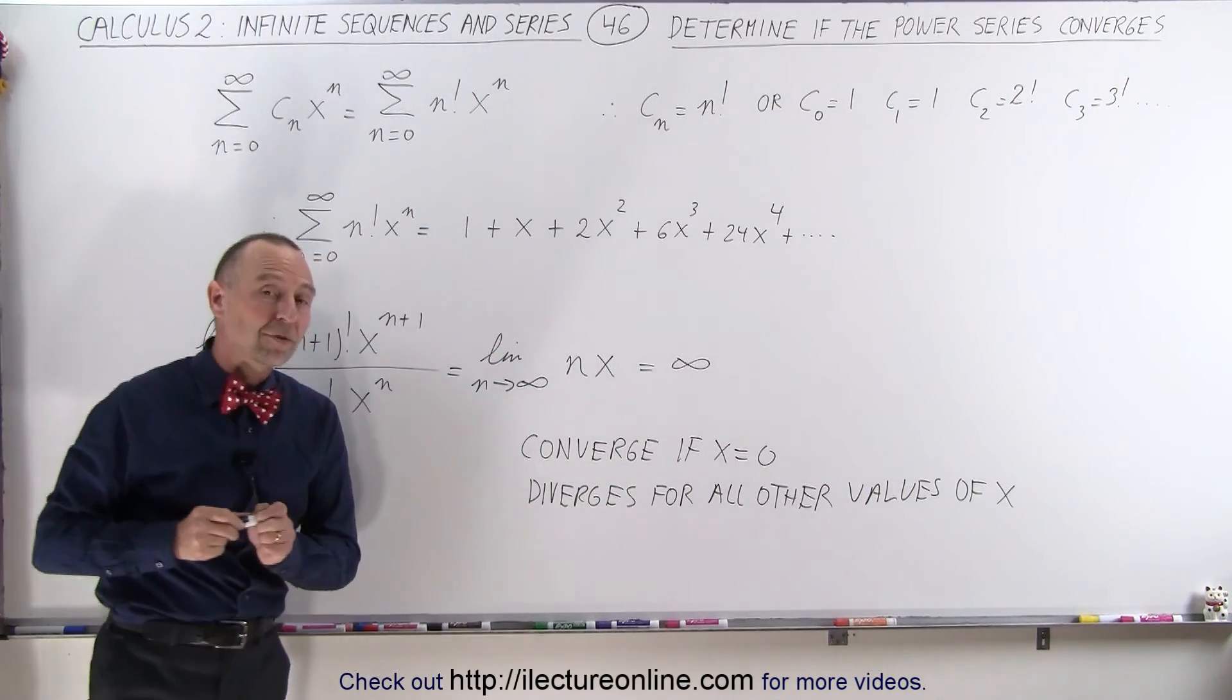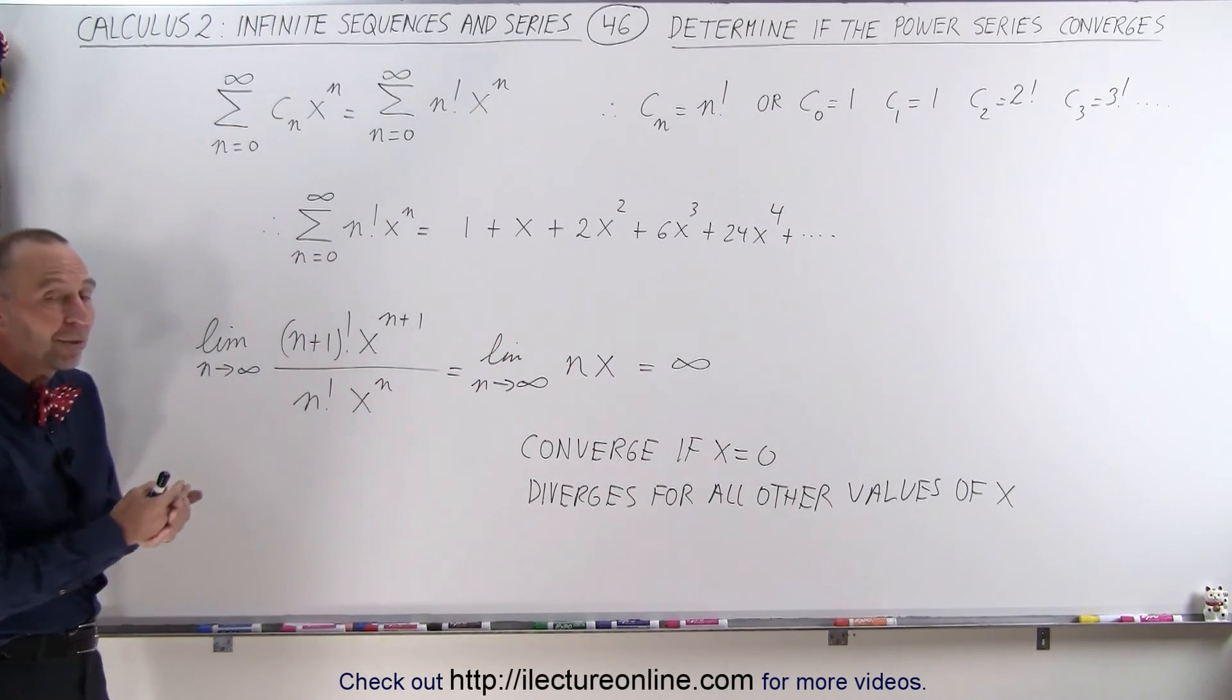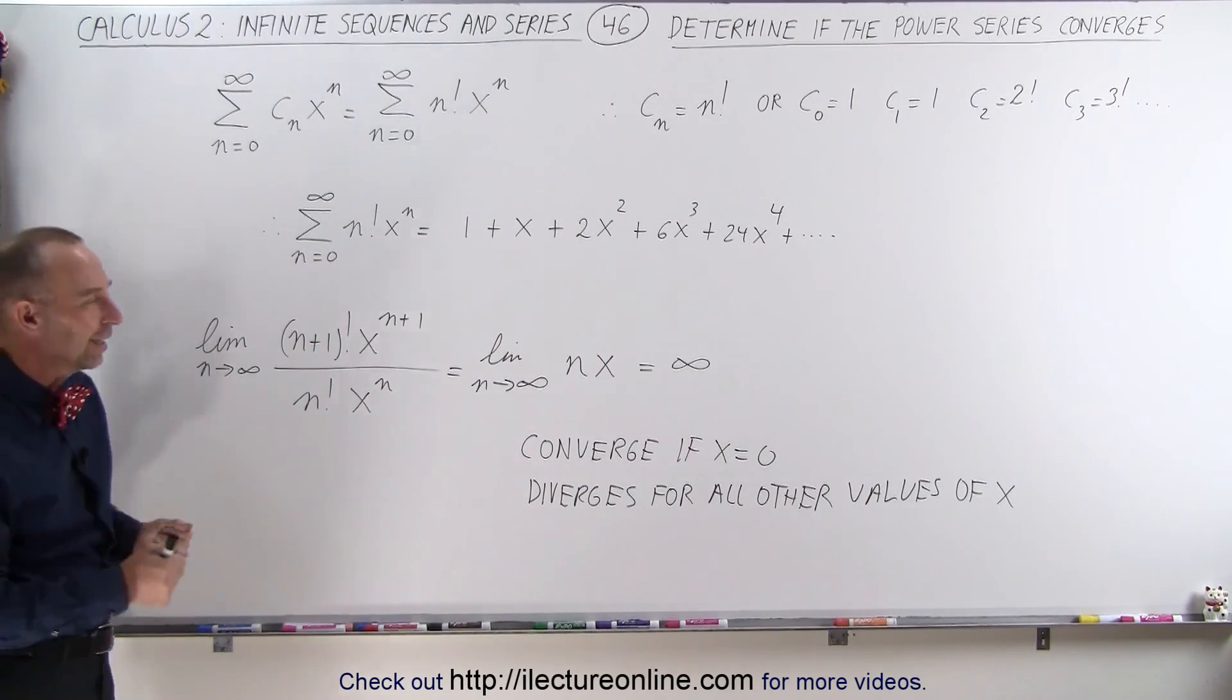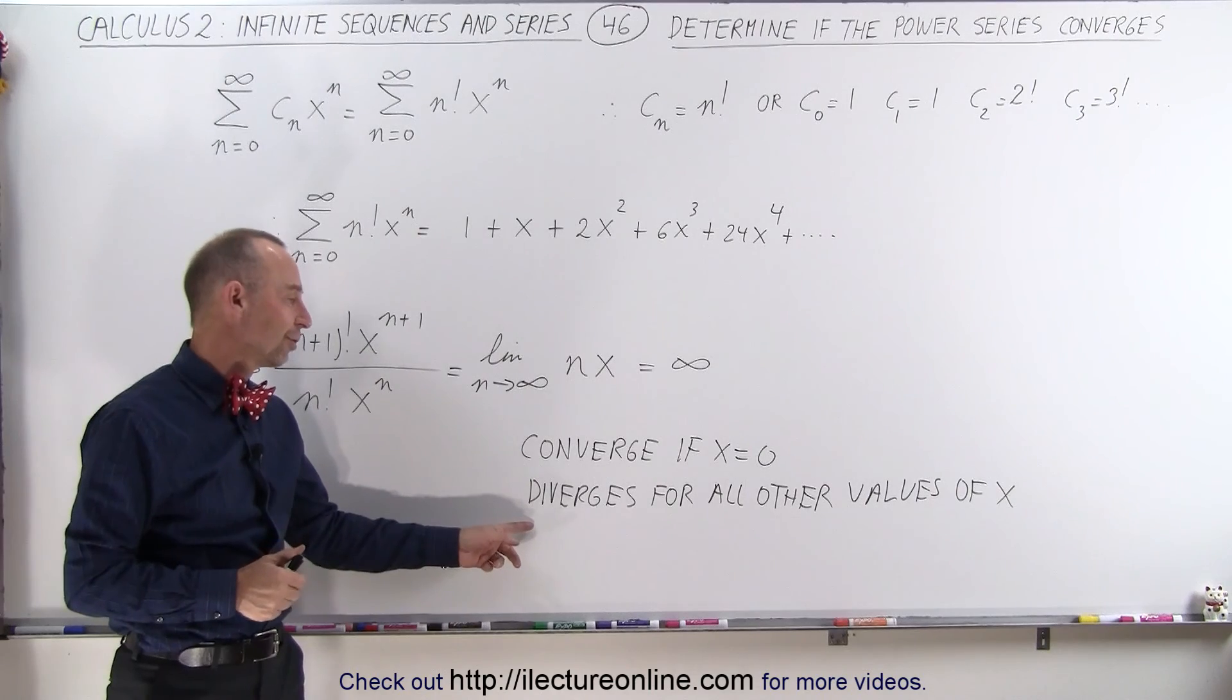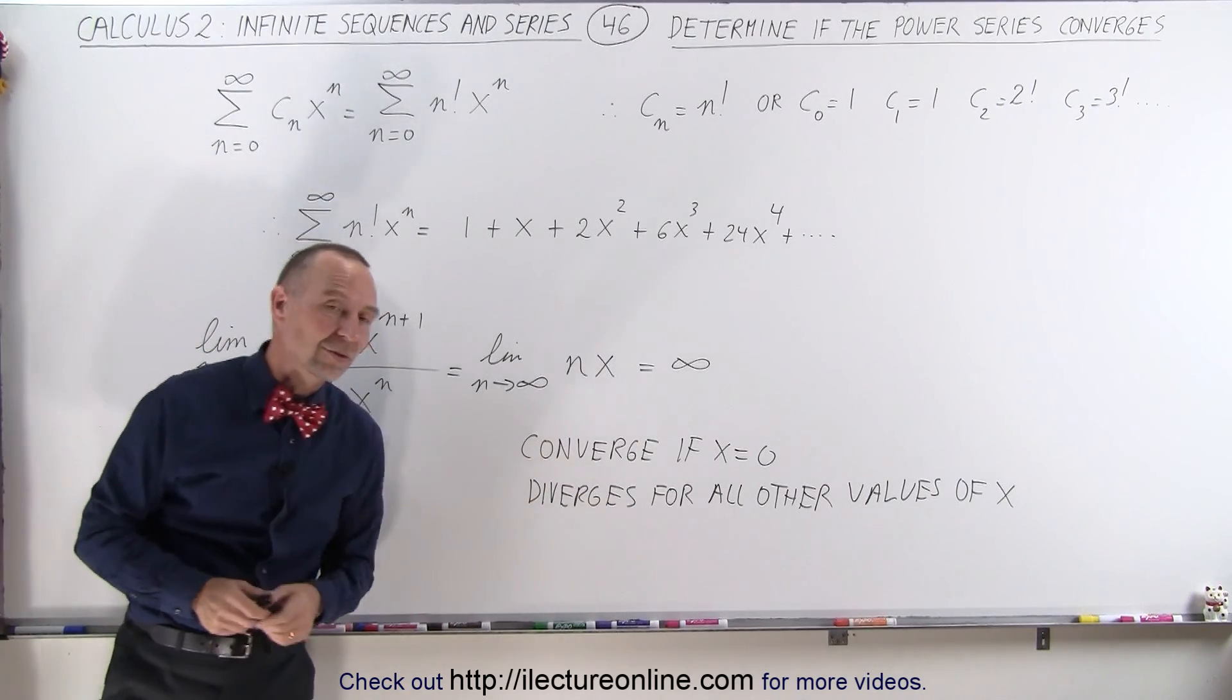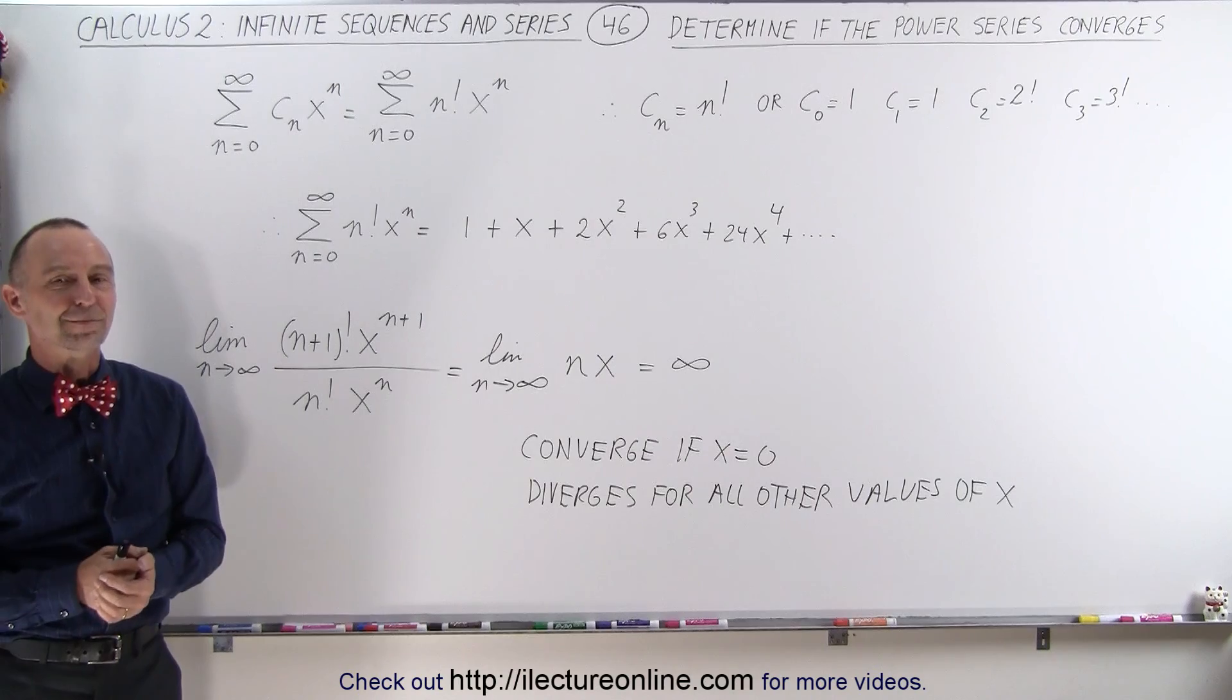So you can see, even with power series, we sometimes have to come up with some clever techniques to figure out if the power series converges or not. In this case, all but one value for x, the power series will diverge, but when x equals 0, it will indeed converge. And that's how it's done.